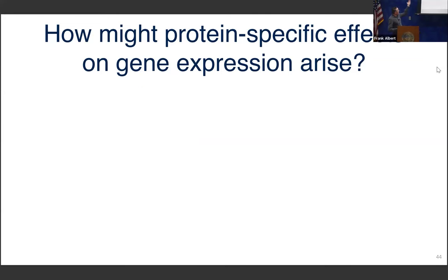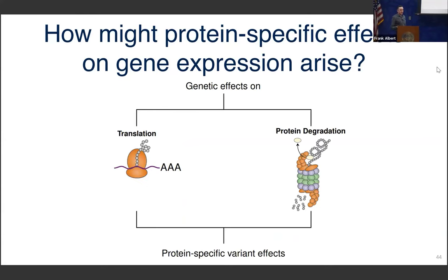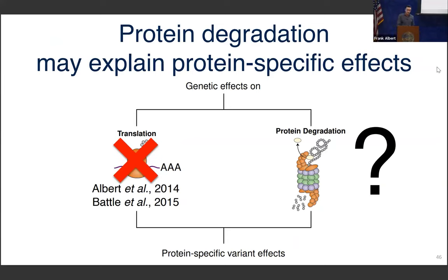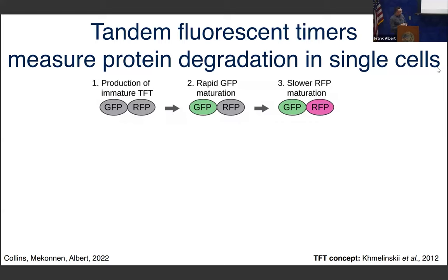Nikolai invited me to present here at the end of December, and a week later Malon applied for a job at PSI — completely independently, I really swear I did not tip Malon off. So Malon fixed this problem by recognizing there are these cool reporter systems called tandem fluorescent timers, or TFTs, which are a fusion of two fluorophores — green and red. They were developed in the Knob lab at the University of Heidelberg. GFP matures and folds quickly, so a young protein will already be green. It takes more time for the red to mature, so only older protein molecules show both colors.